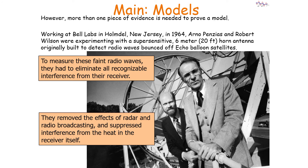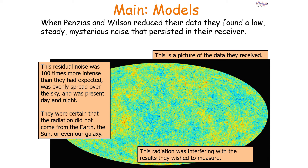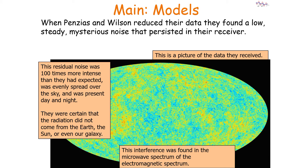Working in Bell Labs in New Jersey, Arno Penzias and Robert Wilson were experimenting with a super sensitive horn antenna originally built to detect radio waves bouncing off weather satellites. To measure these faint radio waves, they had to eliminate all recognisable interference from the receiver. They removed the effects of radar and radio and suppressed interference from heat in the receiver itself. However, when they produced their data, they found a low mysterious noise that persisted — it was a hundred times more intense than expected, evenly spread over the night sky, and present day and night. The interference was found in the microwave spectrum.